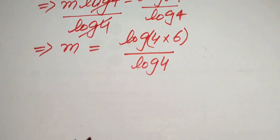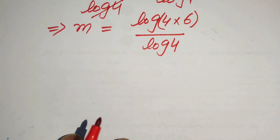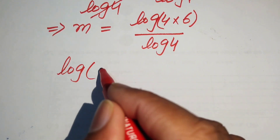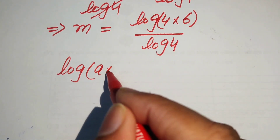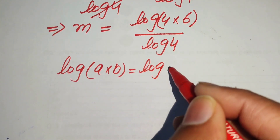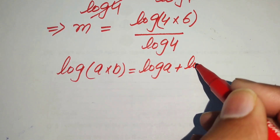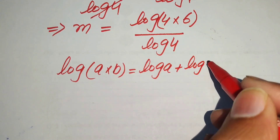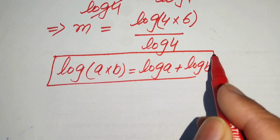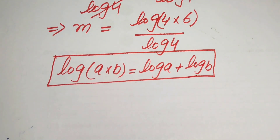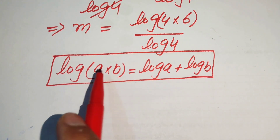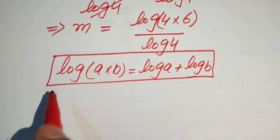After this step, we need another property of log: if we have log of a multiplied by b, it is written as log of a plus log of b. We apply this product property of log to this term.